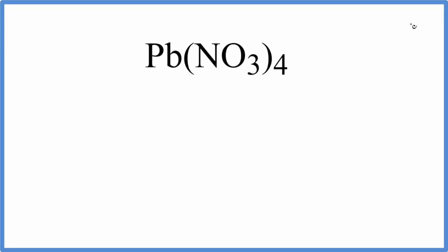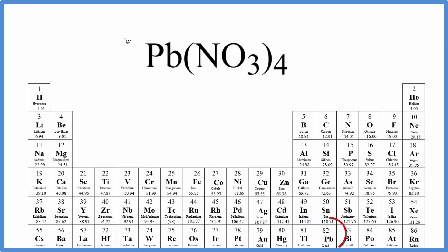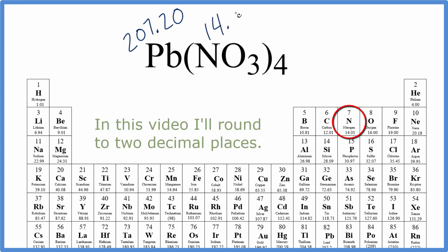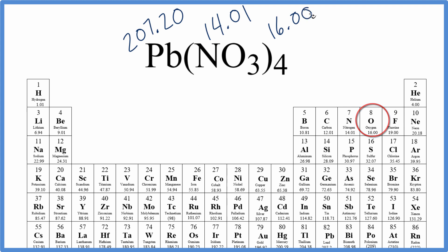To calculate the molar mass for lead nitrate, we'll go to the periodic table. Lead is 207.20 grams per mole, nitrogen 14.01, and oxygen is 16.00 grams per mole.